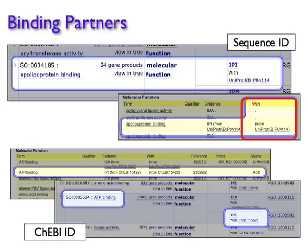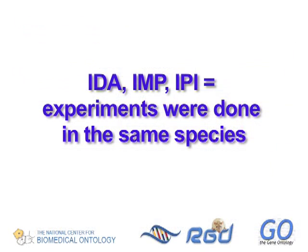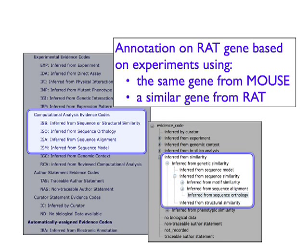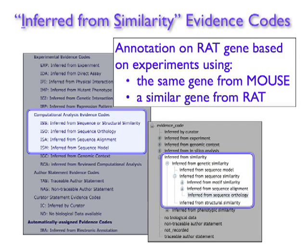meaning that the binding activity is inferred from its demonstrated physical interaction with this binding partner. The use of evidence codes like IDA, IMP, and IPI means that experiments were done using that gene or gene product from that species. But suppose I wanted to make an annotation on a rat gene based on experiments done with the same gene from mouse, or a gene from rat that's similar but not the same. In those cases, the code used would be one of four inferred from similarity evidence codes.